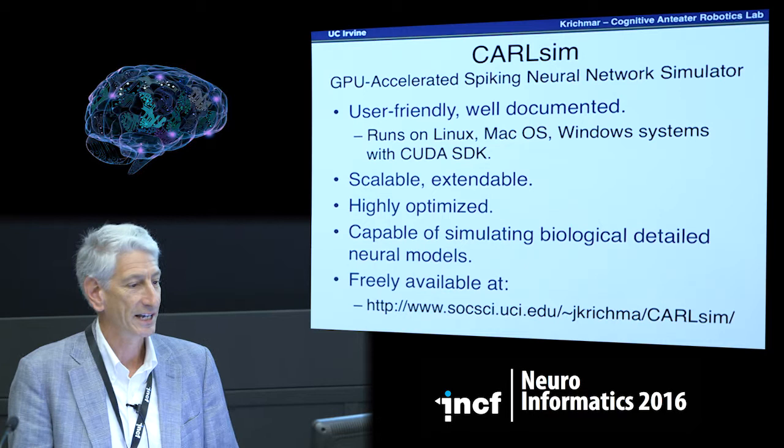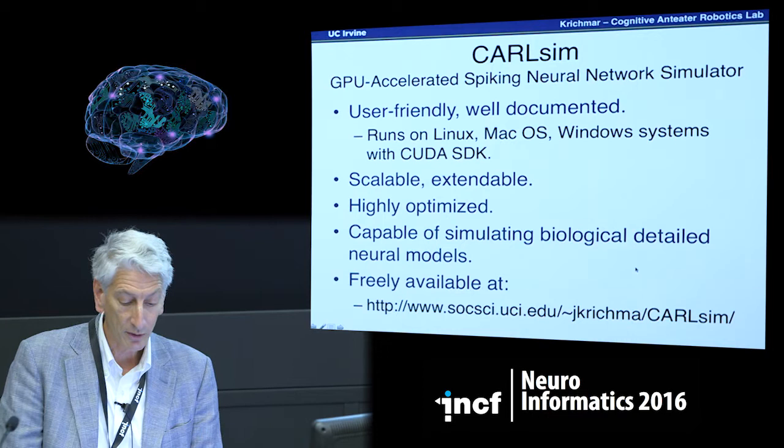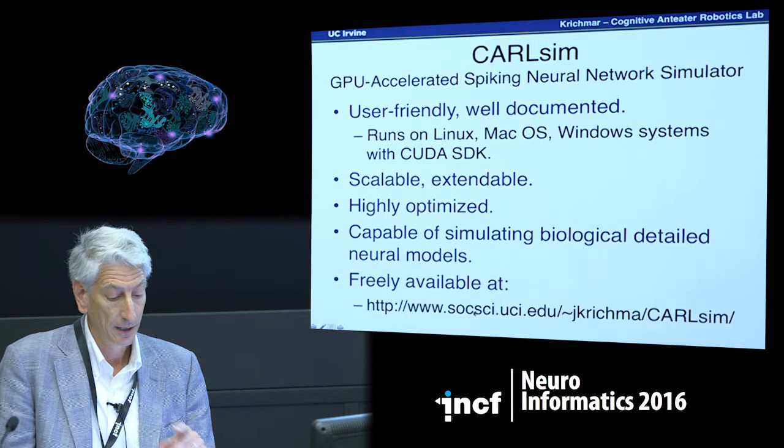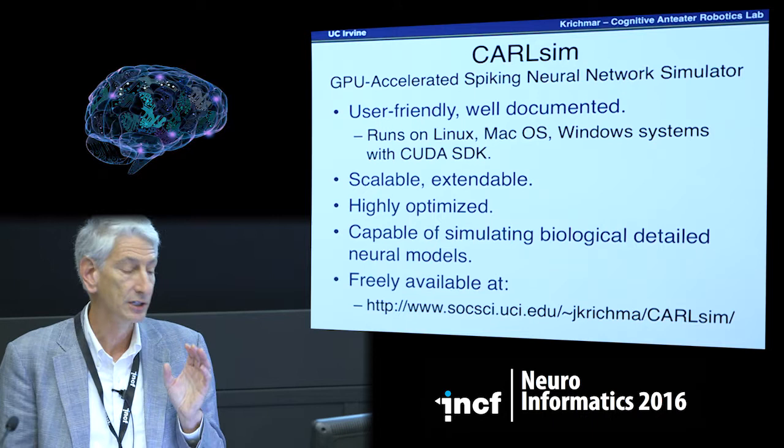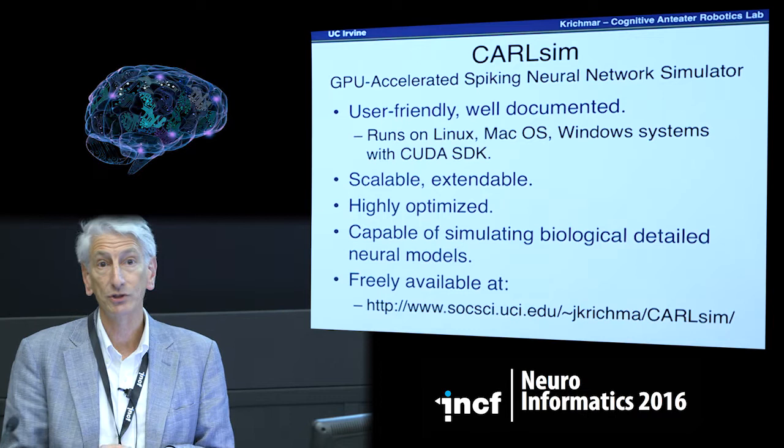CarlSim is freely available off our website or GitHub. The last two versions have been nicely documented and provide tutorials, so we hope it's easier to use. It's scalable, extendable, very optimized, and has a whole suite of APIs that make building large-scale spiking networks easier.